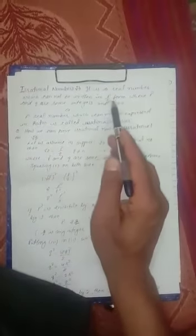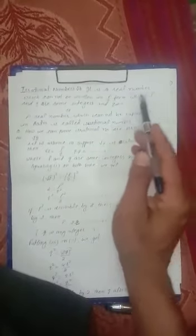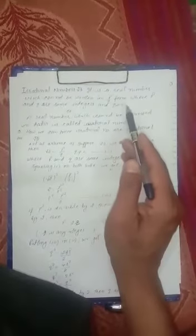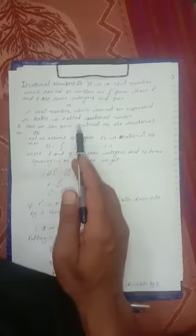Firstly, the definition of irrational number. You can write it in many ways. It is a real number which cannot be written in p upon q form, where p and q are some integers and q not equal to zero. This is just opposite to the rational number, or you can say that a real number which cannot be expressed in a ratio is called irrational number. The question arises, how we can prove irrational numbers are irrational?